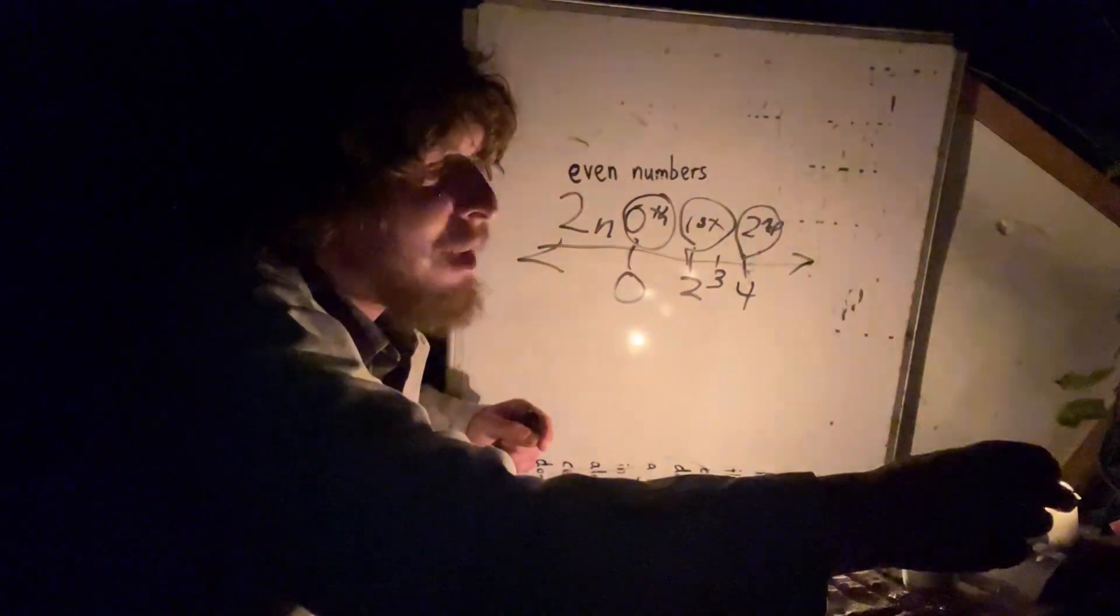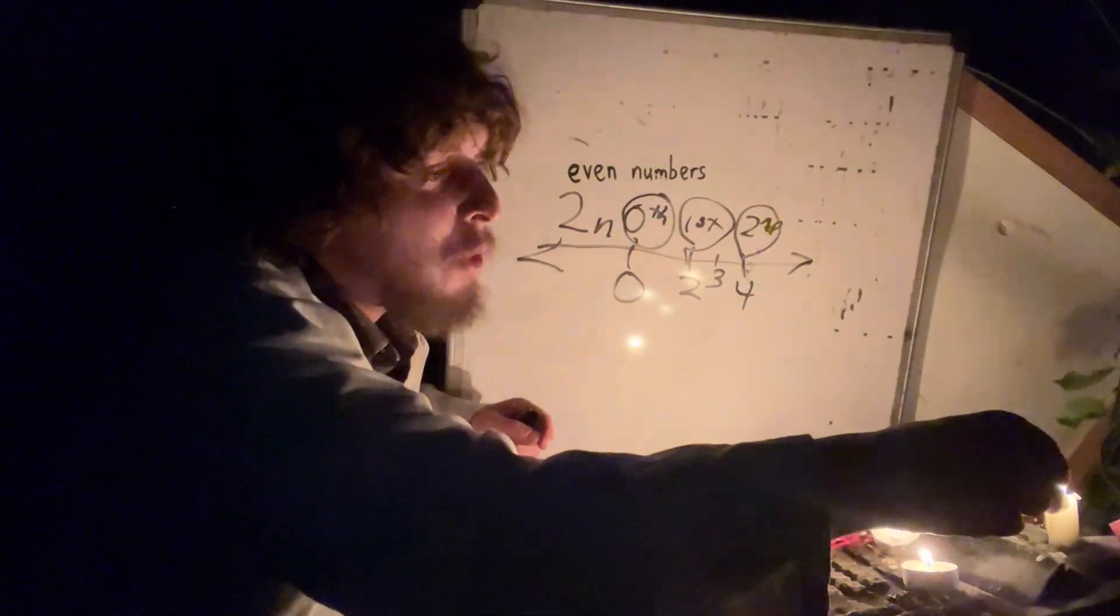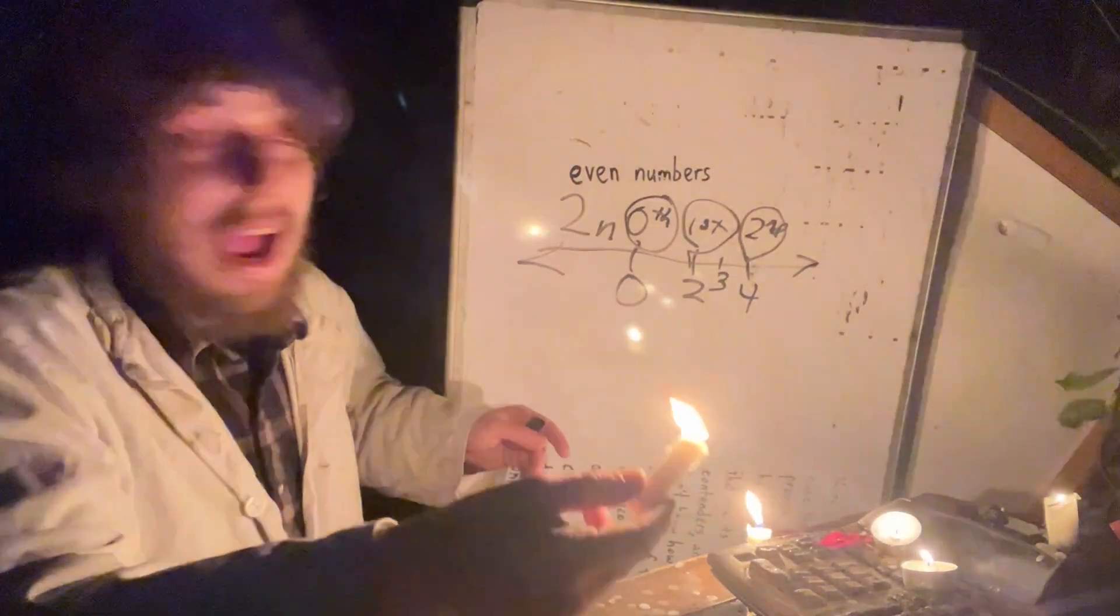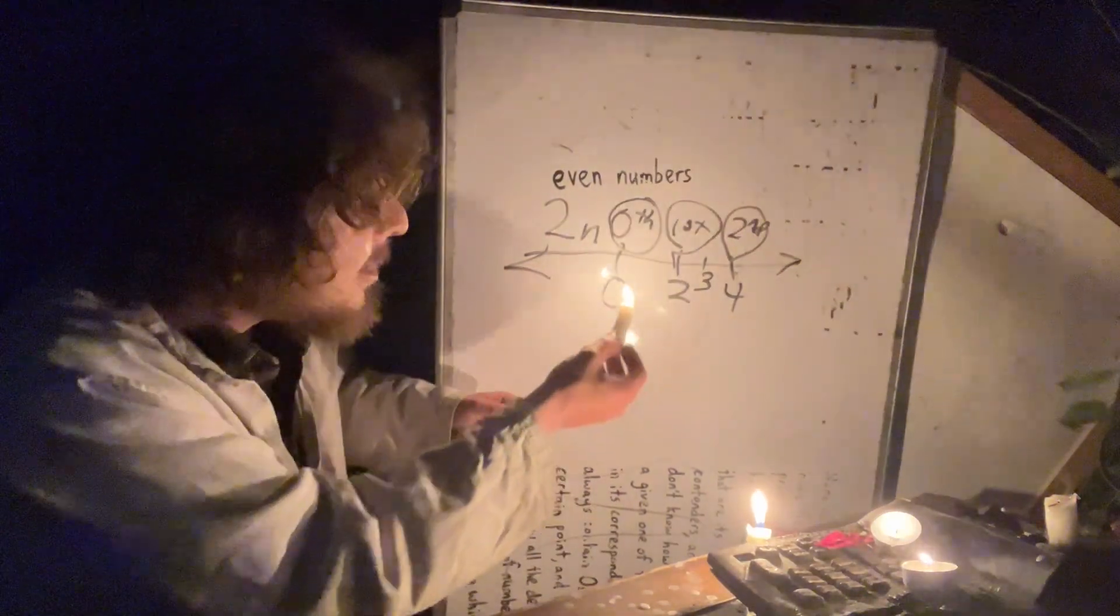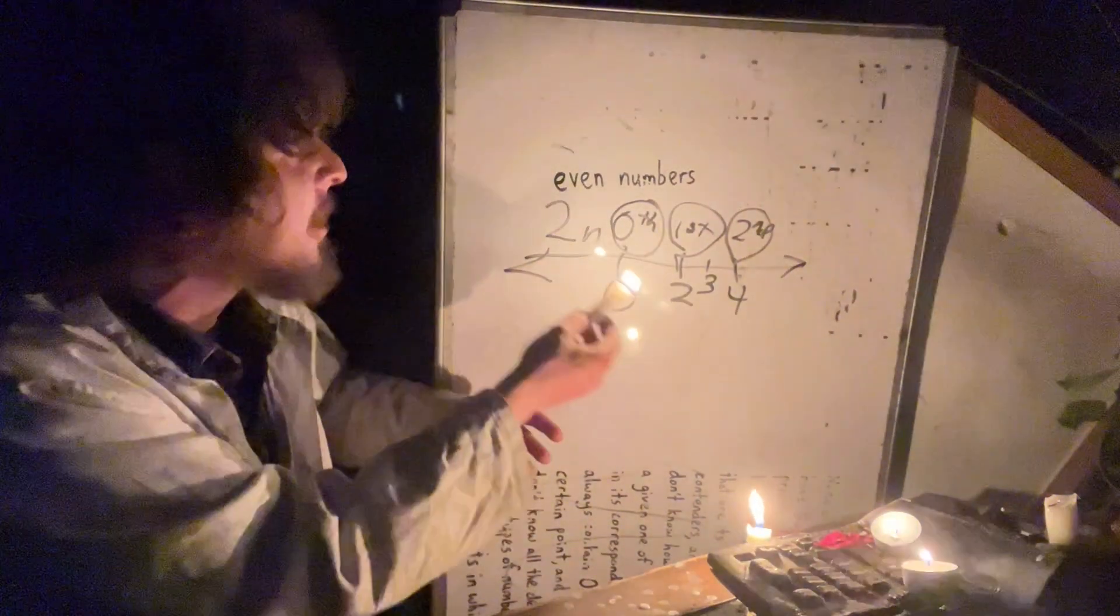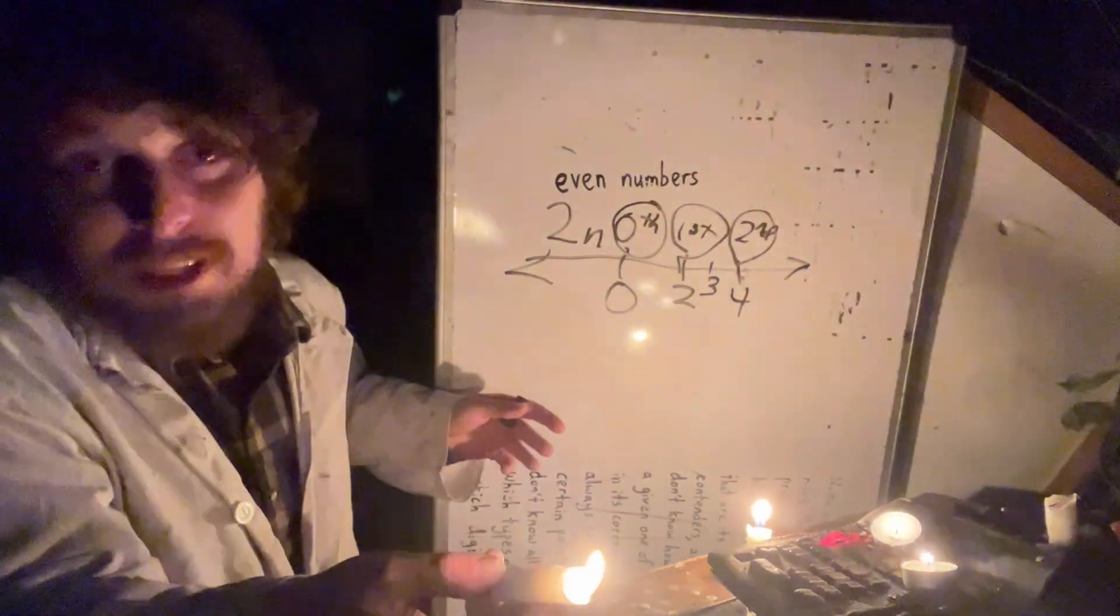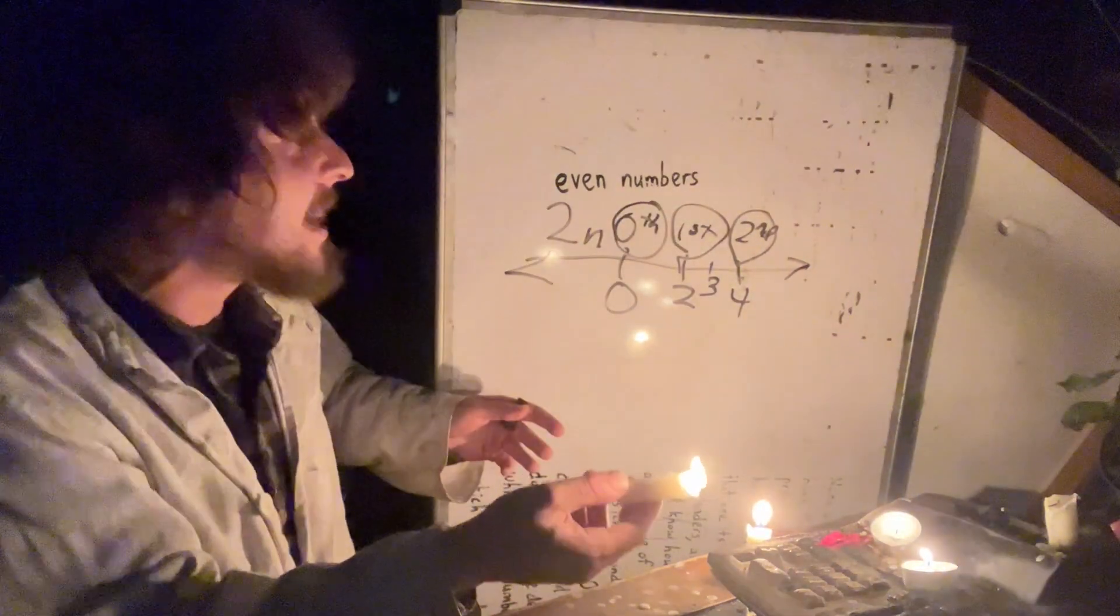And we could say that zero is the zeroeth even number. Unlike the prime numbers, where it's a bit more subjective and more likely that other labelings would have uses, here, it's pretty much always going to be what we get when we plug into that formula.